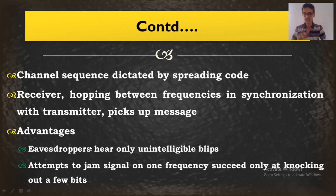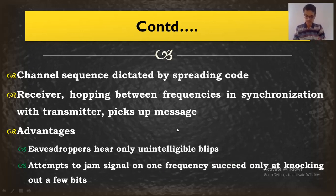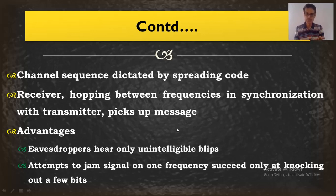Only whoever has the spreading code or PN sequence will be able to decode the information. Others will not — it looks like unintelligible blips for the eavesdroppers, meaning unauthorized persons who want to hear what you are communicating. They don't get intelligible information, they cannot decode it because they don't know the PN code. Only the transmitter and the receiver know the PN code. If they attempt to jam the signal on one particular frequency, only that particular information bit is compromised — only a few bits, not more — because I'm switching between so many frequencies and they have to continuously track.